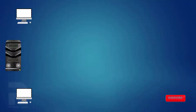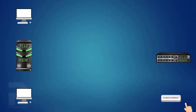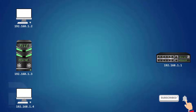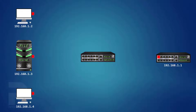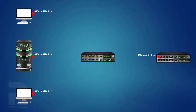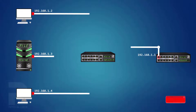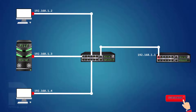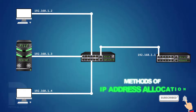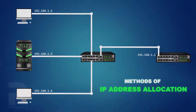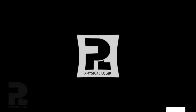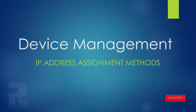Devices capable of IP communications must be configured with an IP address to enable network layer functionality. This IP address defines its physical location on the network and is associated with the interface via which the device connects to the network. In this presentation, we'll learn the different methods of assigning IP addresses and other network parameters to devices.